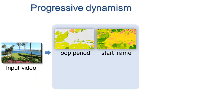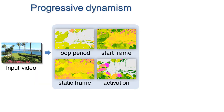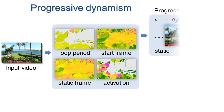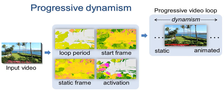We extend the representation to offer greater runtime control. We first compute a per-pixel static frame and activation level. This defines a progressive video loop in which a slider continuously varies the level of dynamism, from a static image to a highly animated scene.